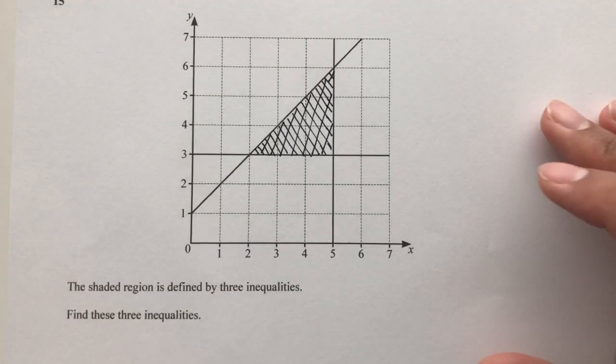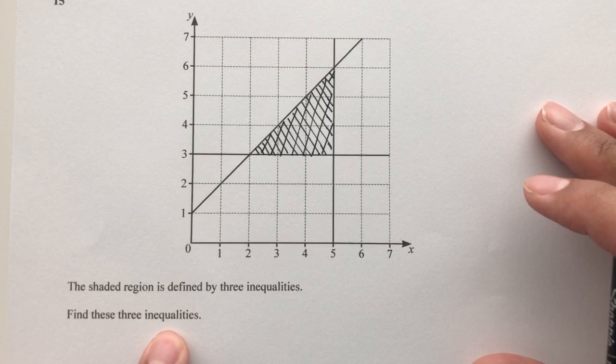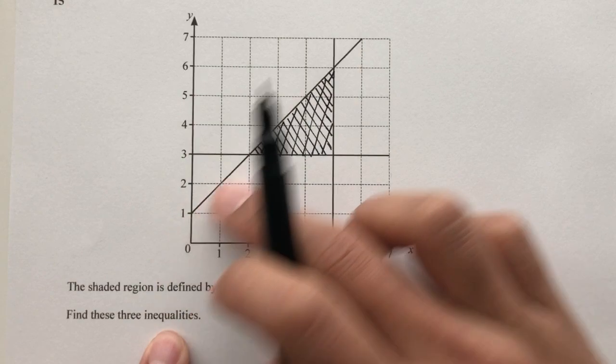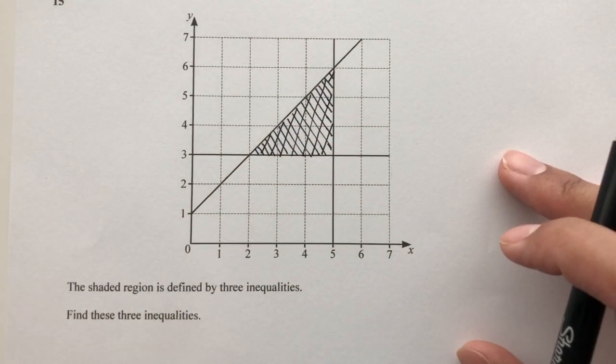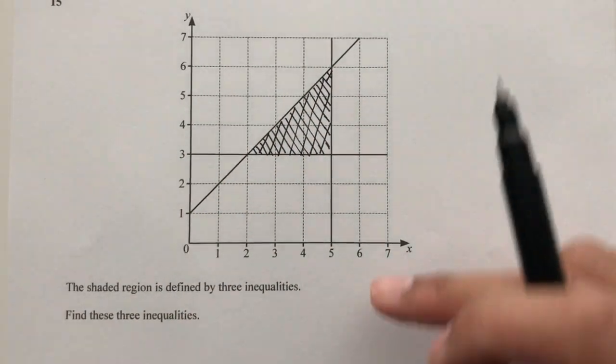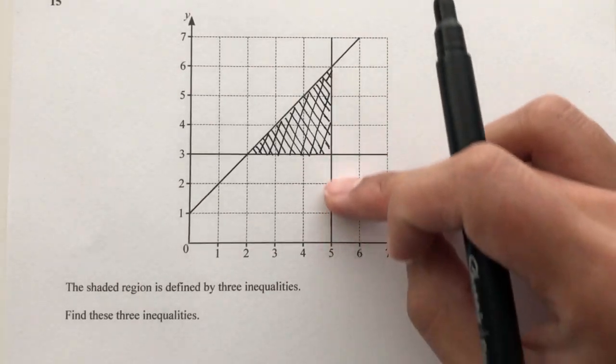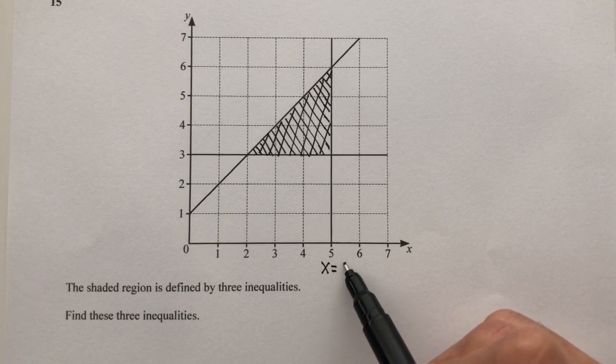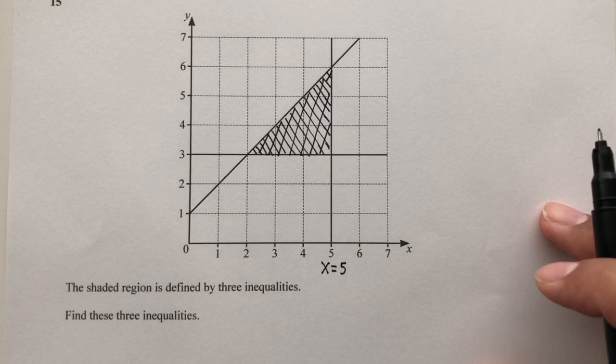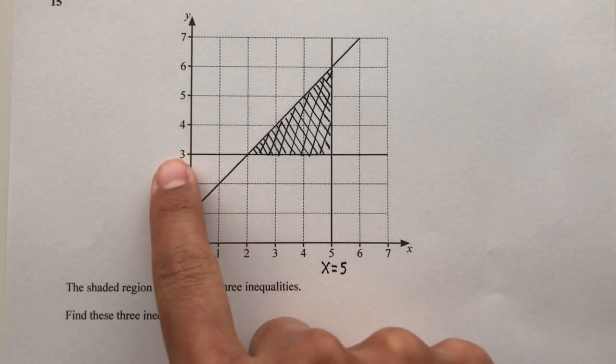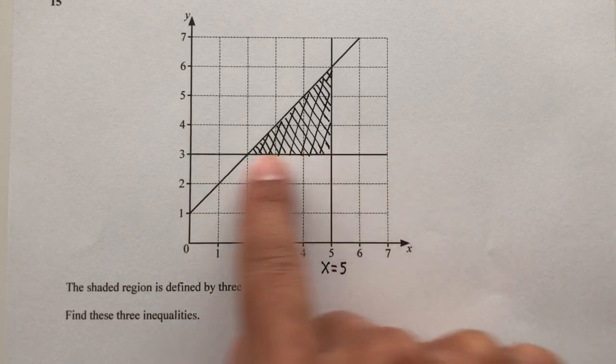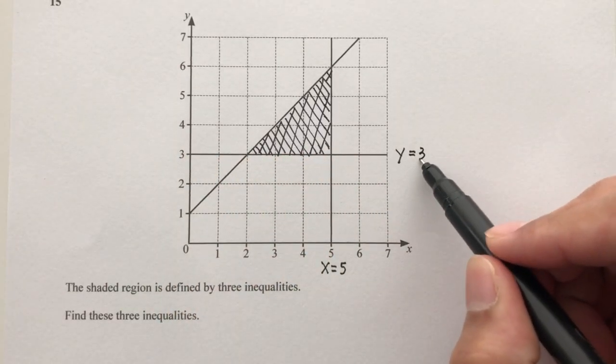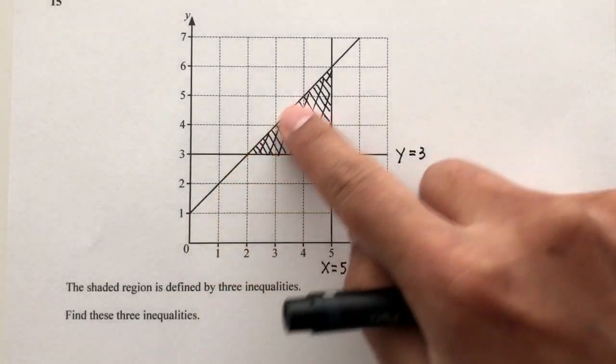To find the inequalities, you must first find the equation of those lines. That's the first step. This one is a vertical line - the equation is x equal to 5. And this one is a horizontal line - the equation has to be y equal to 3.